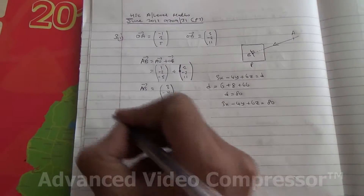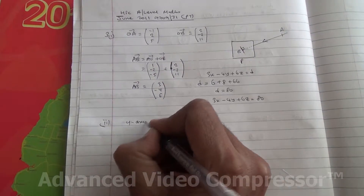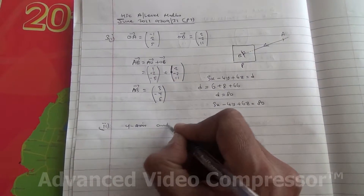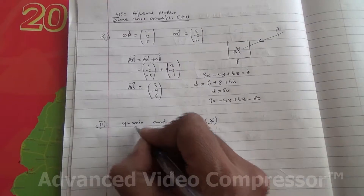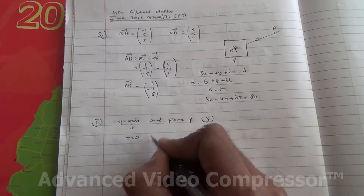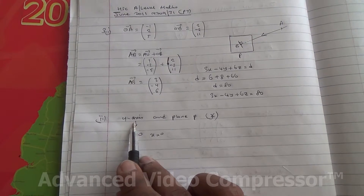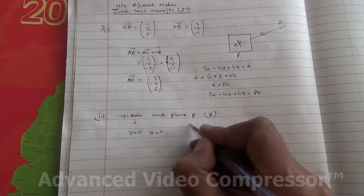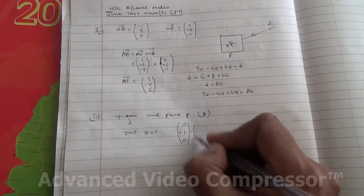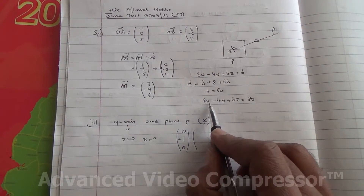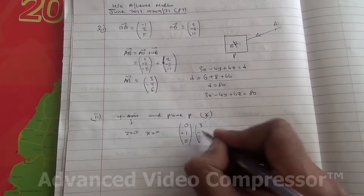For the second part, we need to find the acute angle between the Y-axis and plane P. The Y-axis implies the Z component is 0 and the X component is 0, so the direction vector of the Y-axis is 0, 1, 0. We dot product this with the normal to the plane, which is 3, minus 4, 6.